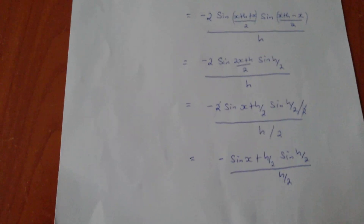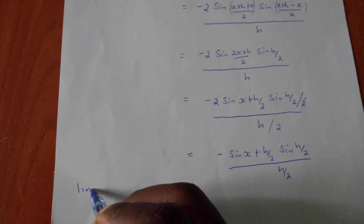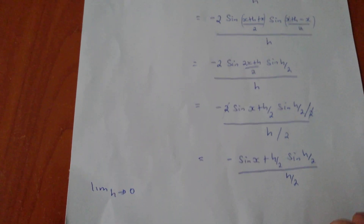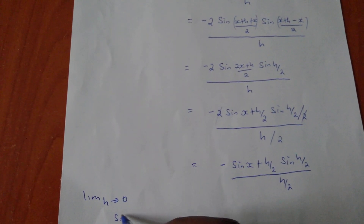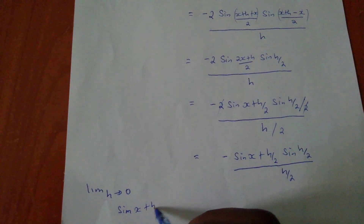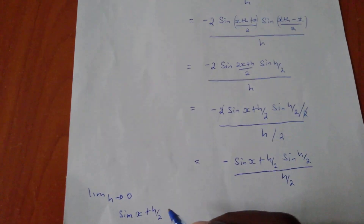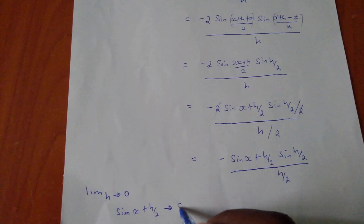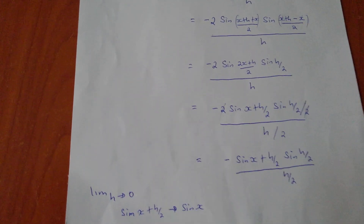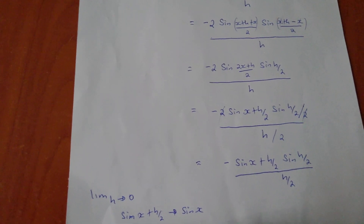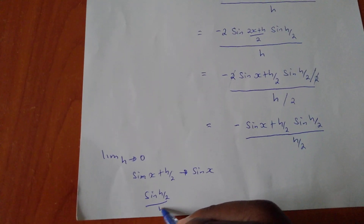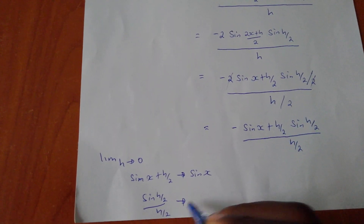Now going back and applying the limit as h tends to 0: sine(x plus h/2) tends to sine x as h tends to 0. And sine(h/2) over (h/2) tends to 1, using the standard limit.